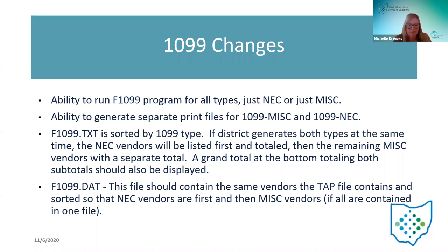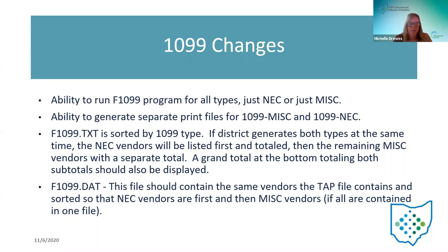The F 1099 text file: the program sorts by 1099 type. If a district generates both types at the same time — NEC and miscellaneous — the NEC vendors will be listed first, and then the remaining miscellaneous vendors with a separate total, and then a grand total at the bottom. The 1099 DAP file should contain the same vendors that the tape file contains, sorted so that NEC vendors are first and then the miscellaneous vendors if they're all combined on one file. That's how it's going to roll out.